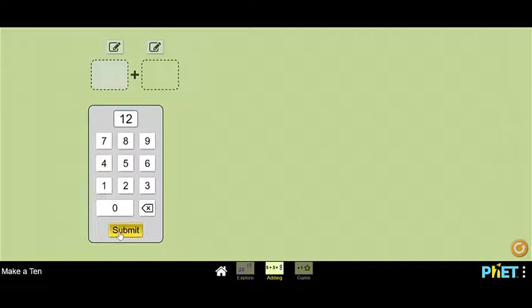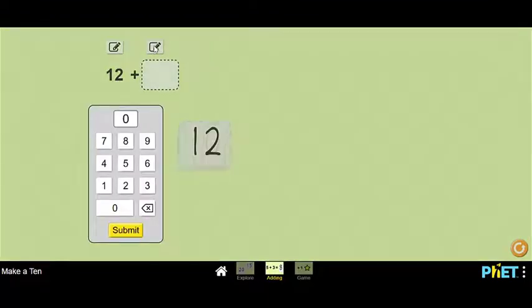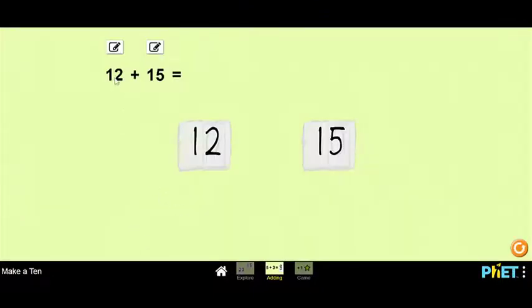And I'm just going to choose a number. How about 12 for this one? And for this one, I'm going to add something to 12. How about 15? All right. So I'm adding 12 plus 15. So it might be kind of hard to think about just adding these together. So an easier way to do this is we could take the ones off.